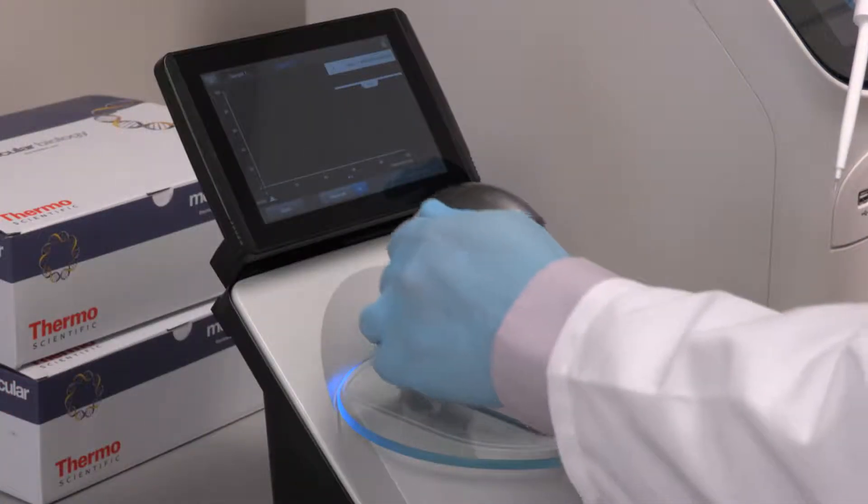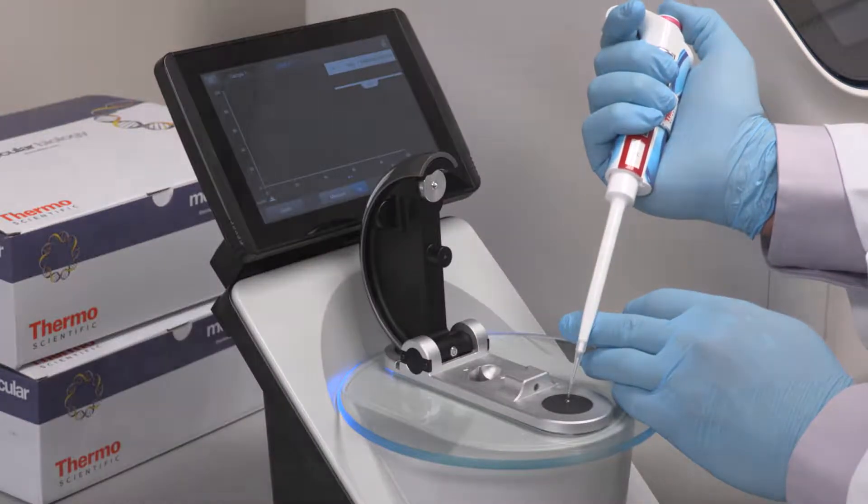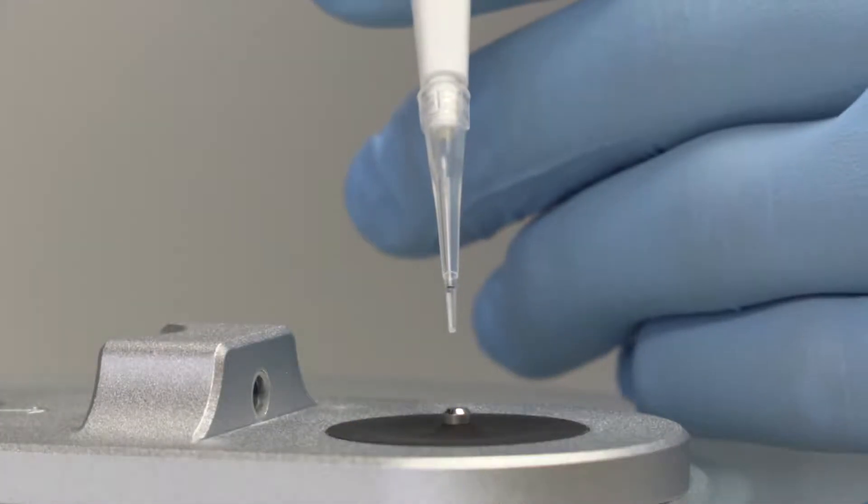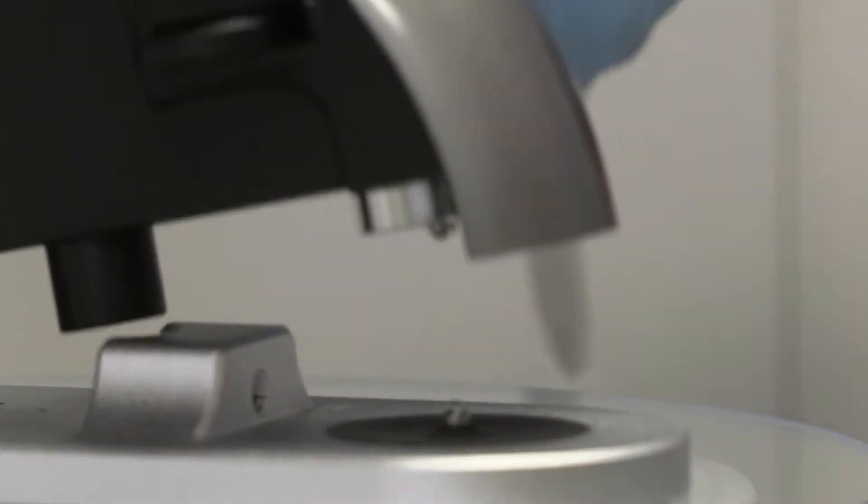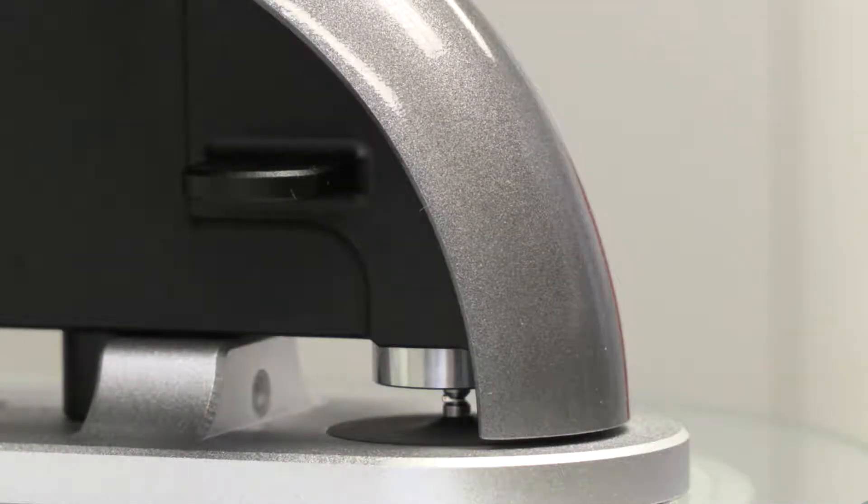The two instruments we will focus on are the Thermo Scientific NanoDrop 1 microvolume UV-Vis spectrophotometer and the Invitrogen Qubit 4 fluorometer. The NanoDrop 1 spectrophotometer uses absorbance at 260 nm and the Beer-Lambert equation to calculate DNA and RNA concentrations. The primary benefits of the NanoDrop 1 instrument are quick measurement times, the ability to measure concentrated samples without dilution, and obtaining information about sample purity.